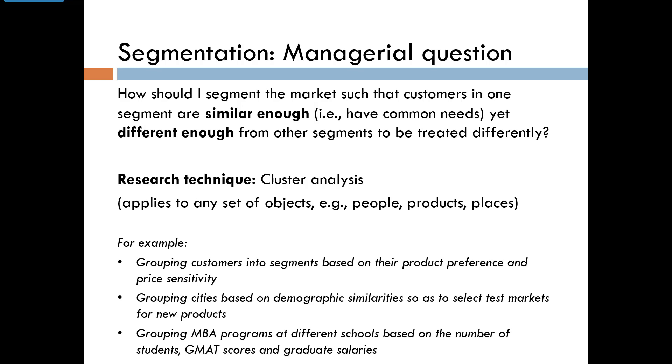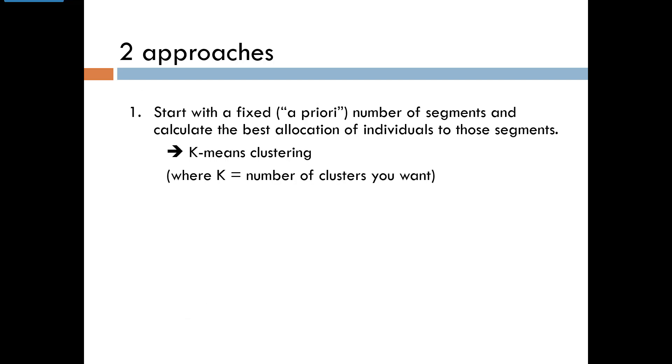This technique can be used with any type of object. For example, you can group customers or cities or MBA programs into clusters. Broadly speaking, there are two approaches to clustering. The first is called K-means clustering. Here, you decide beforehand how many clusters or segments you want and figure out the best way to allocate people to those clusters.